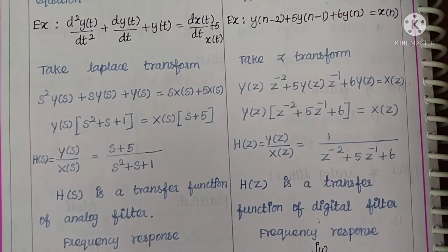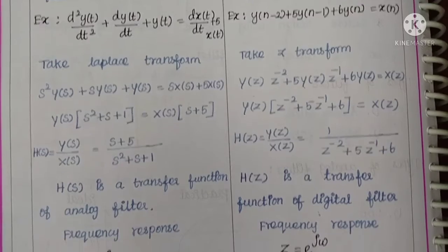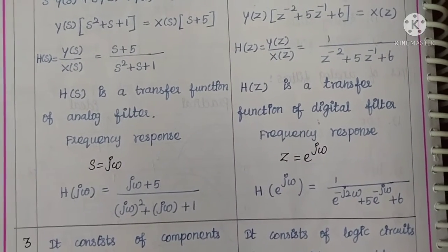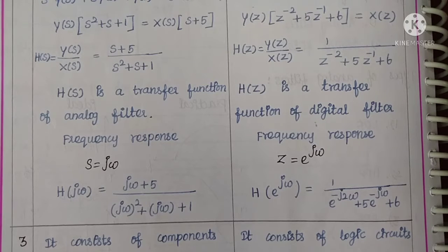H(s) equals (s + 5) divided by (s² + s + 1), where H(s) is the transfer function of the analog filter. If we substitute s = jω, it becomes H(jω) = (jω + 5) divided by ((jω)² + jω + 1). So these are the steps for the analog filter.